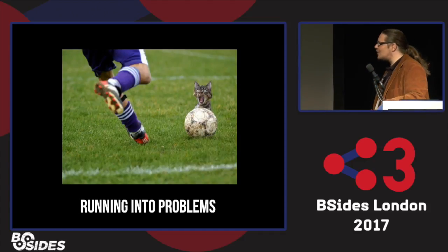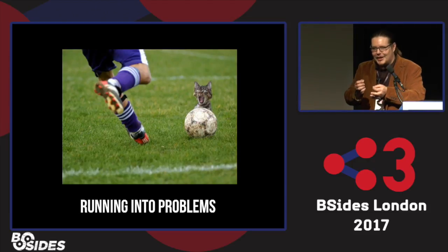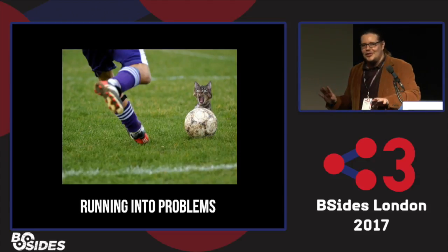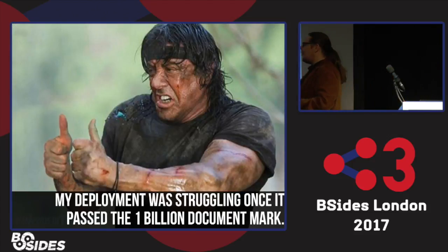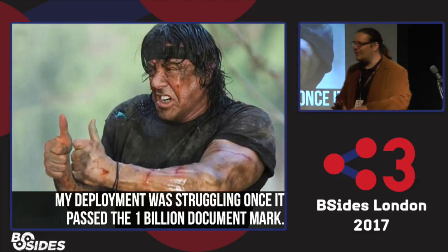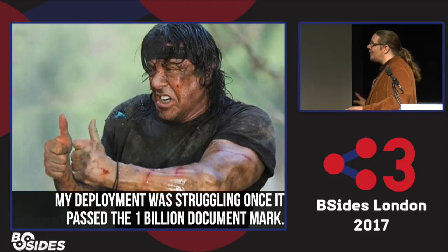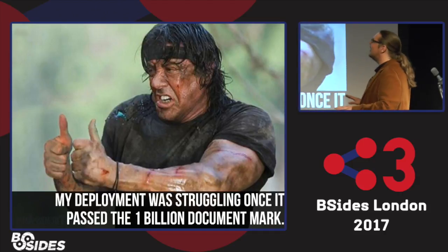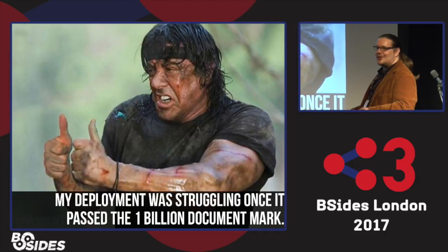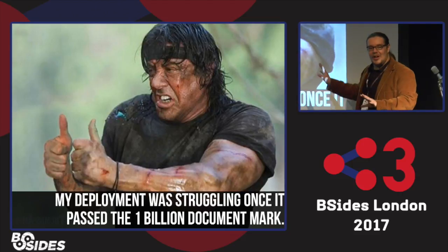I ran into problems early on because I knew absolutely nothing about search engines. Elasticsearch is dangerous enough to let an idiot do something like this, but not smart enough to keep you out of danger later on. It went well at 128 million records, but past a billion documents things got really freaky. I had made some fundamental flaws in how I was doing things. Once I redid the indexes, used analyzing sparingly, and worked on sharding better, we managed to iron the problems out.